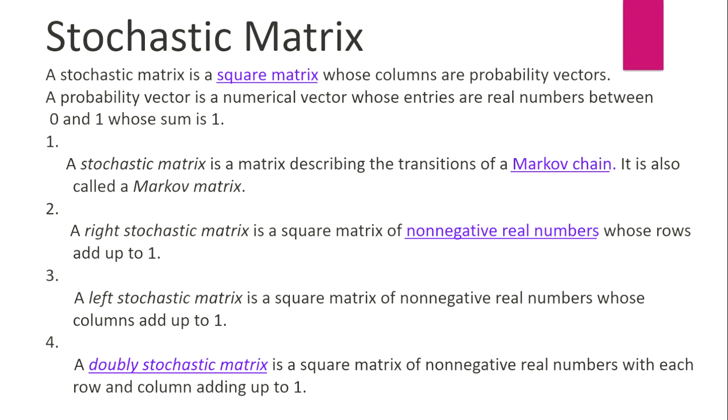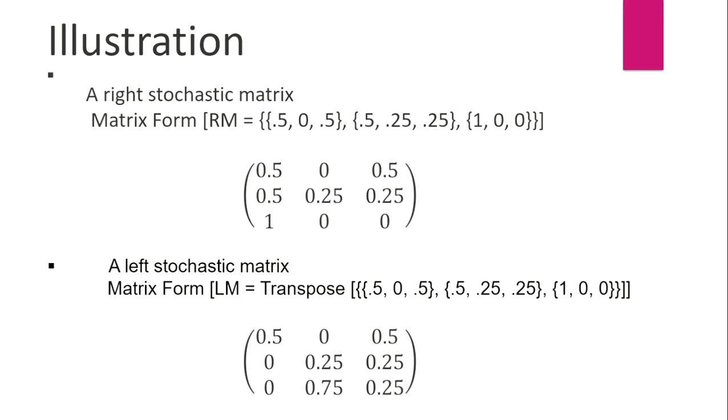A left stochastic matrix is a square matrix of non-negative real numbers whose columns add up to 1. A doubly stochastic matrix is a square matrix of non-negative real numbers with each row and column adding up to 1.